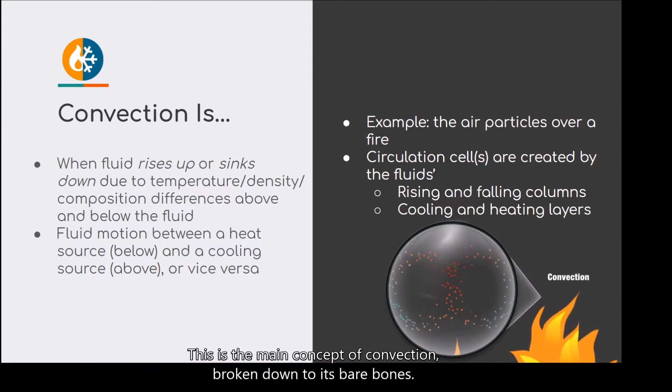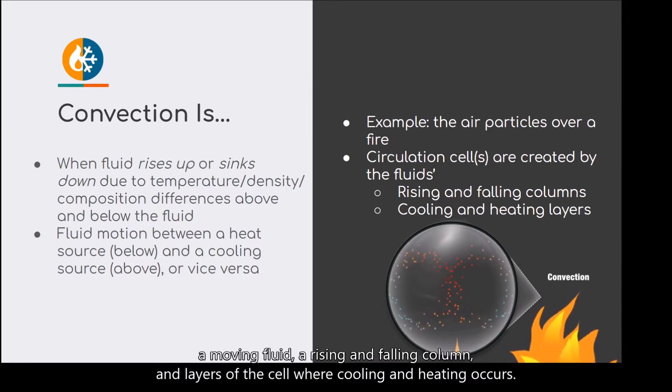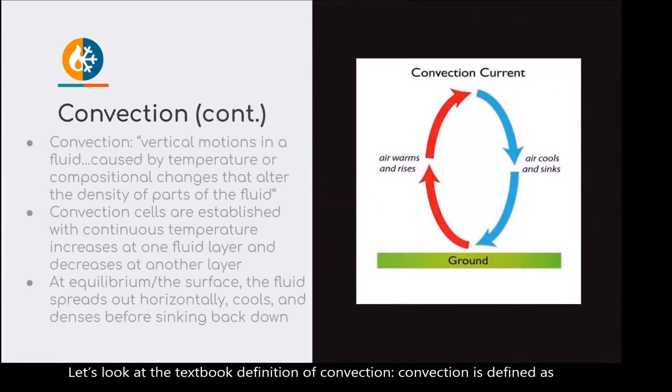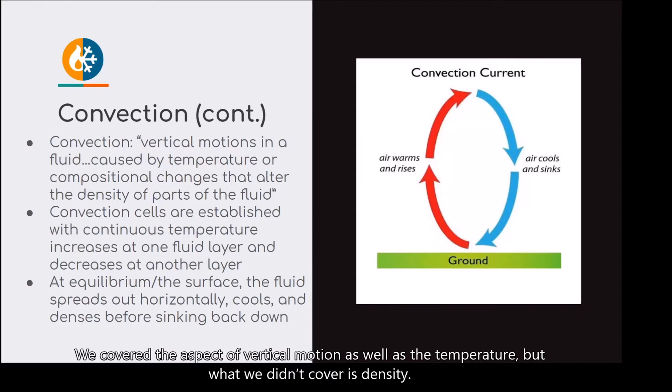This is the main concept of convection broken down into its bare bones. There's a difference in temperature, hot fire, cold air, a moving fluid, a rising and falling column, and layers of the cell where cooling and heating occur. Let's look at the textbook definition of convection. Convection is defined as vertical motions in a fluid caused by temperature or compositional changes that alter the density of parts of the fluid. We covered the aspect of vertical motion as well as the temperature, but what we didn't cover is density.